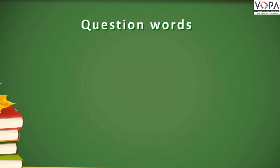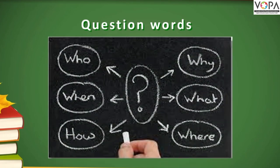Dear students, we are going to see question words, also called WH questions. See the image. These six are WH questions: first is who, second when, third is how, fourth is why, fifth is what, sixth is where. These all are called question words or WH questions.